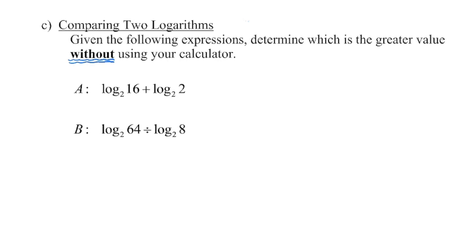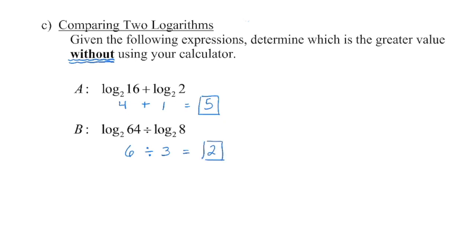Here's a small preview as to why this would have been really exciting. We're going to pretend we have no calculators. If we convert these into exponents: the exponent we put on 2 to get 16 is 4, and the exponent on 2 to get 2 is 1 — add them together, 4 plus 1 is 5. For the second equation: the exponent on 2 to get 64 is 6, and on 2 to get 8 is 3 — 6 divided by 3 is 2. Making a comparison, we can see that the value of a is greater.